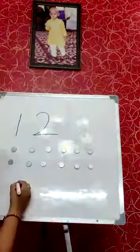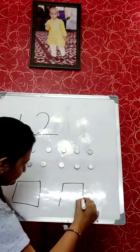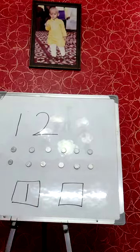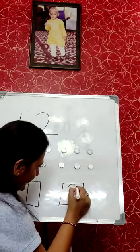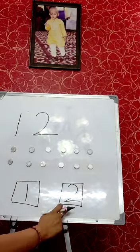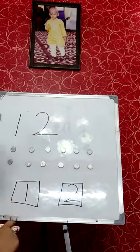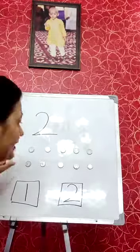Ma'am will tell you again how to write number 12. Look carefully, you have to write in a box. Make a standing line, then go to another box, make a half curve and sleeping line — that's number 2. So 1, 2, 12. We have to paste 12 coins over here.